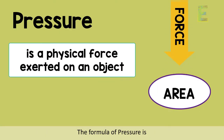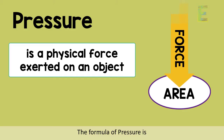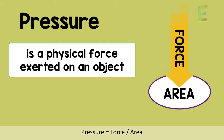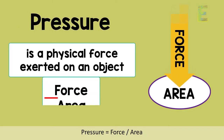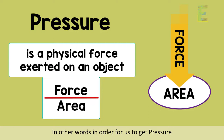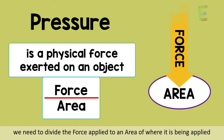The formula of pressure is: Pressure is equal to force over area. In other words, in order for us to get pressure, we need to divide the force applied to an area of where it is being applied.